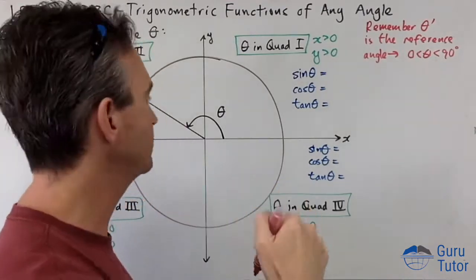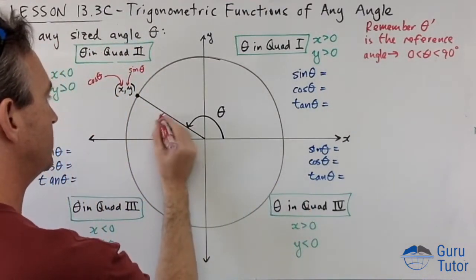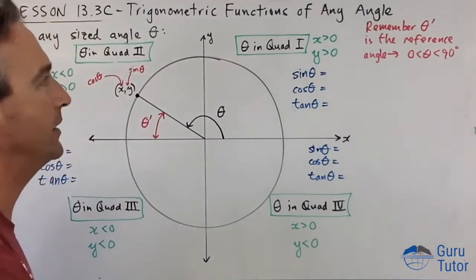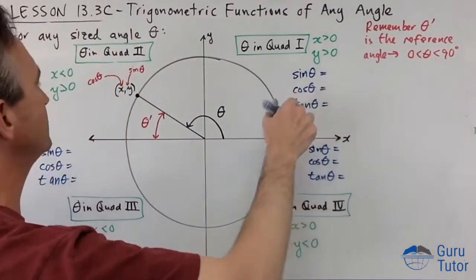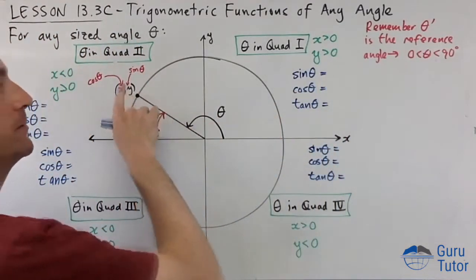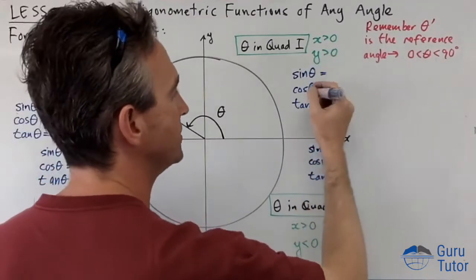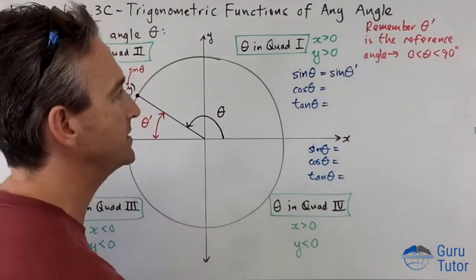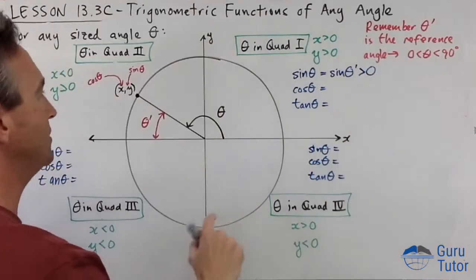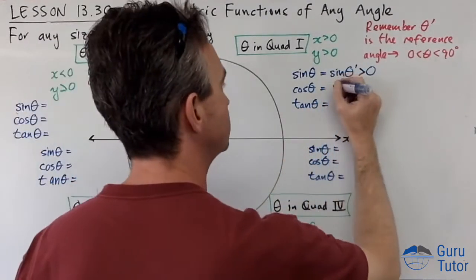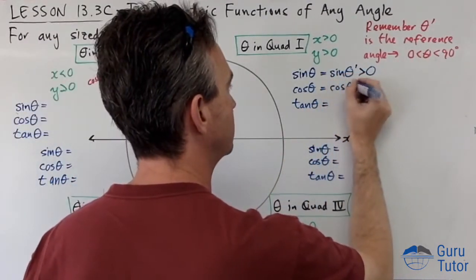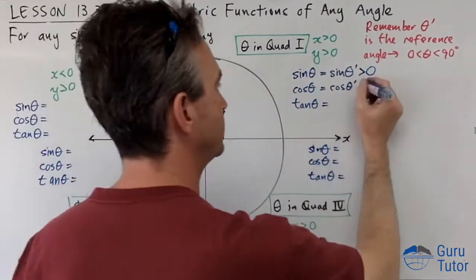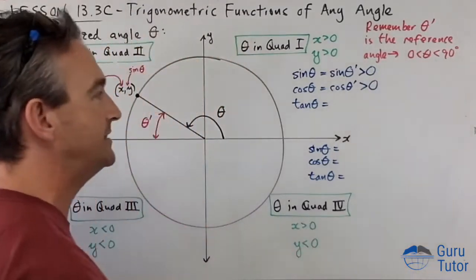Remember, theta dash is always the acute reference angle, and it's always made to the horizontal. In the first quadrant, theta and theta dash are the same. Sine theta equals the y coordinate, which is positive. Cosine in the first quadrant equals the x coordinate, which is also positive.